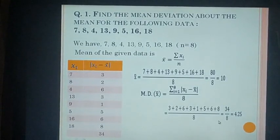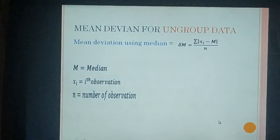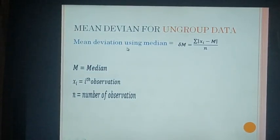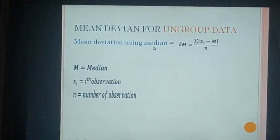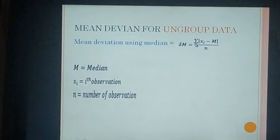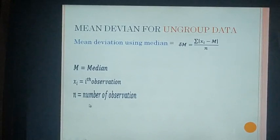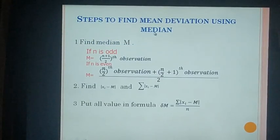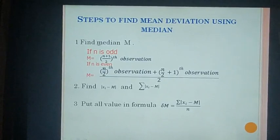Now for mean deviation using median. In the previous section we saw mean deviation using mean; now we are going to see mean deviation using median. The formula is: δM = Σ|xi − M| / n, where M is the median, xi is the ith observation, and n is the number of observations.